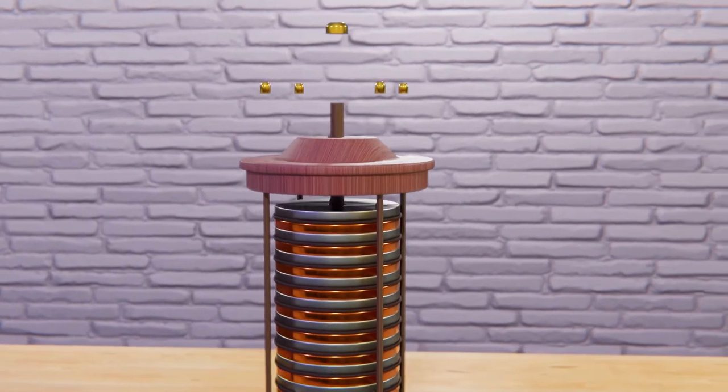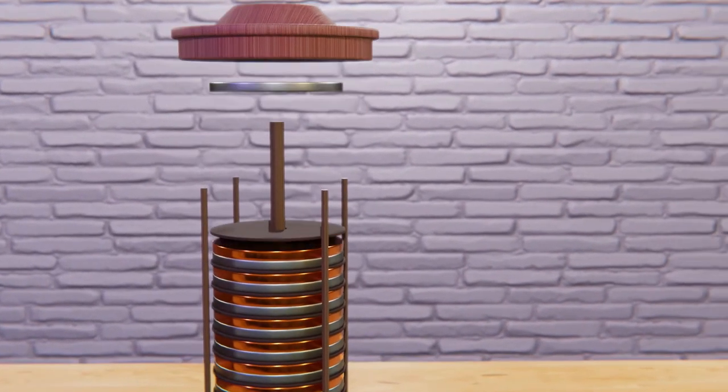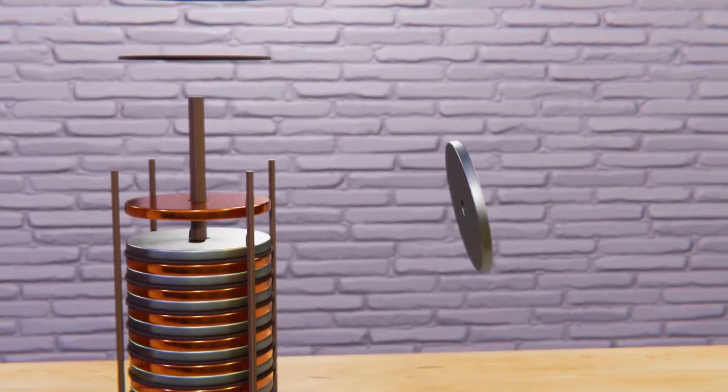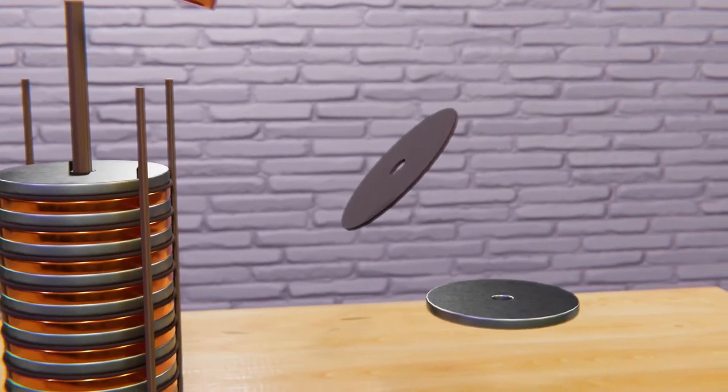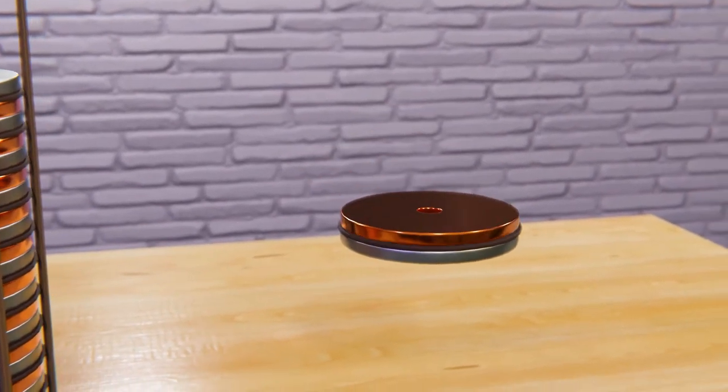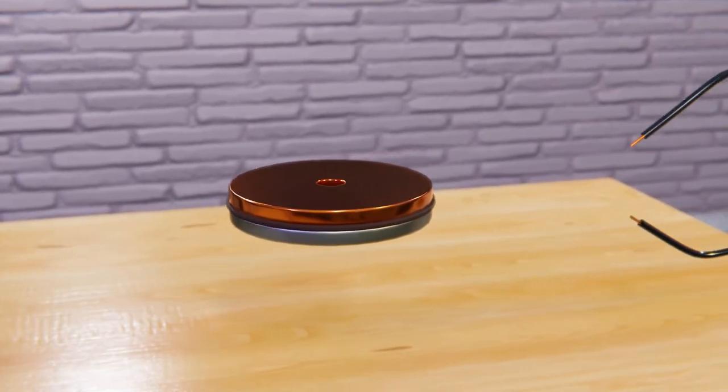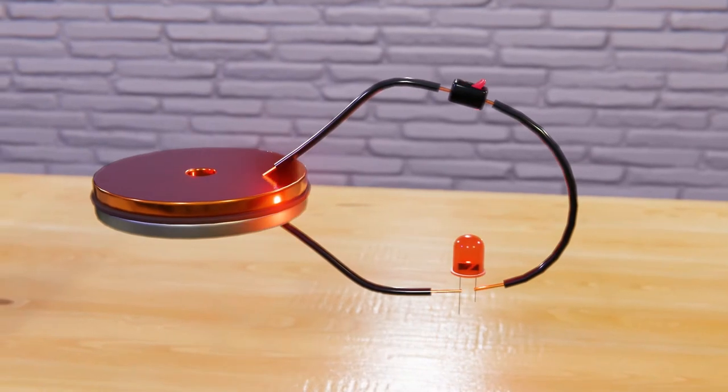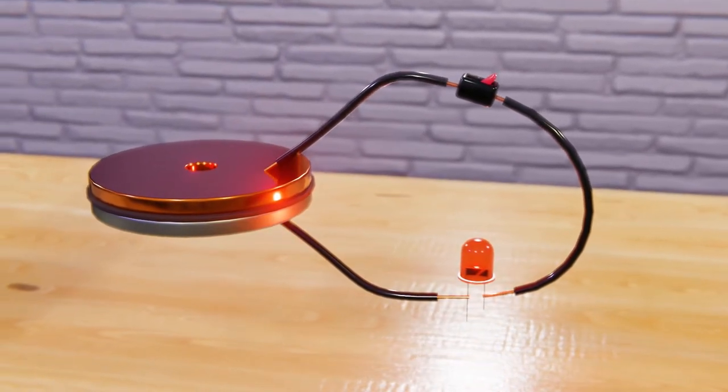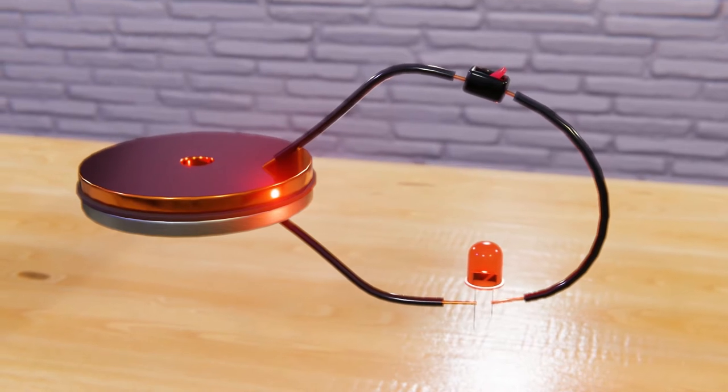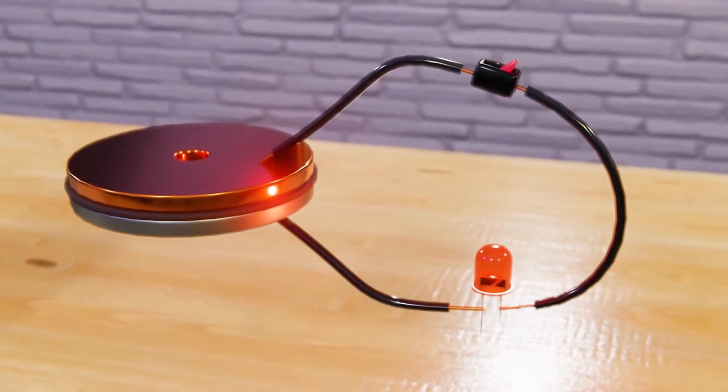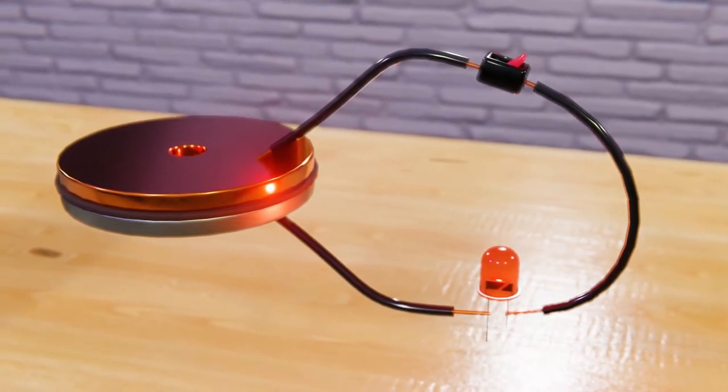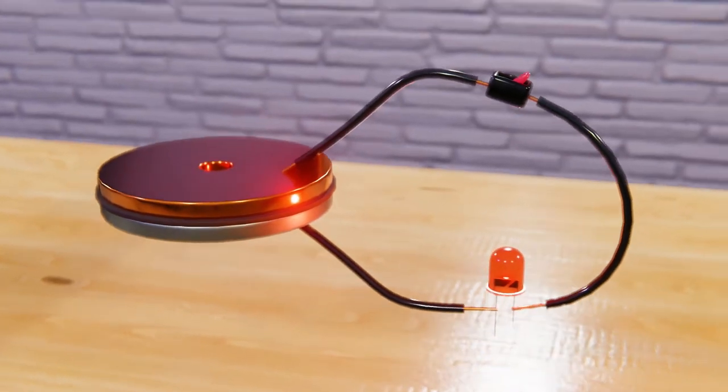But we still don't know how that current is generated. For this we will analyze the most basic form of a battery: a cell. In this case, a single cell was composed of a zinc disc, a separator with electrolyte, and a copper disc, to which we will add some wires and a LED to demonstrate its operation, and a switch to have a little more control.